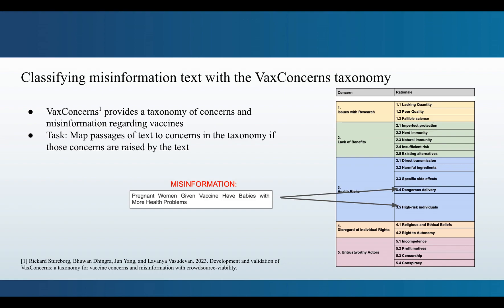So, some public health work has therefore suggested various sets of labeling that would be useful to track. We're following one such work, VaxConcerns, which is a taxonomy of concerns and misinformation regarding vaccines.